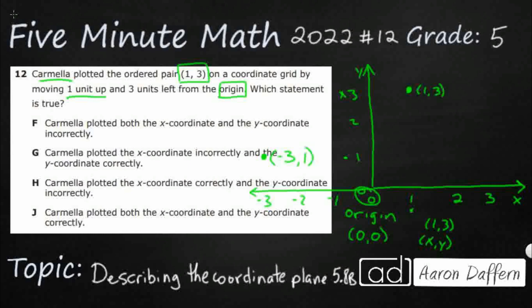So wrong quadrant. Everything we learn in 5th grade is in quadrant 1. This is way over here in quadrant 2. Carmela went up first and then left — which is the wrong direction — and side to side second. Those need to be flipped: you need to go side to side first, that's the x, and then up and down second. So Carmela plotted both the x-coordinate and the y-coordinate incorrectly. She's supposed to be up here at (1, 3) and ended up way down there — they both look incorrect.